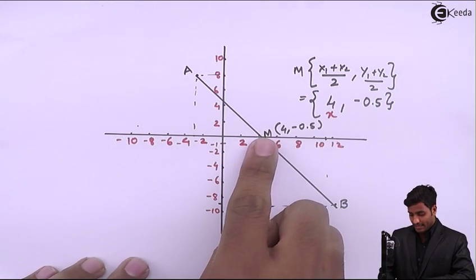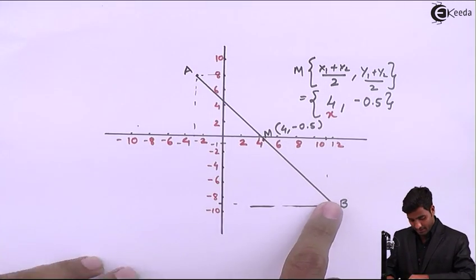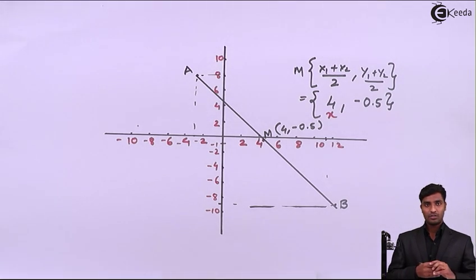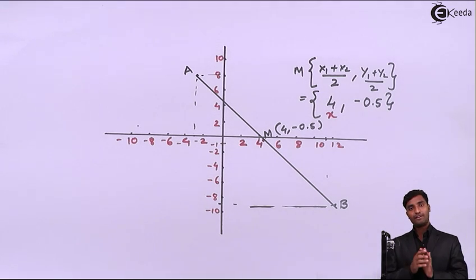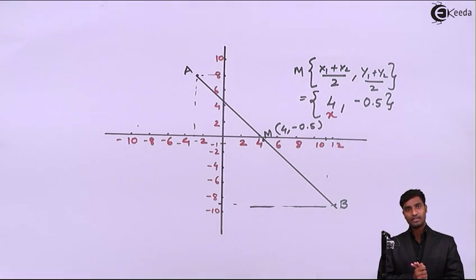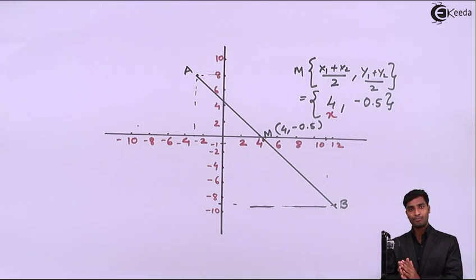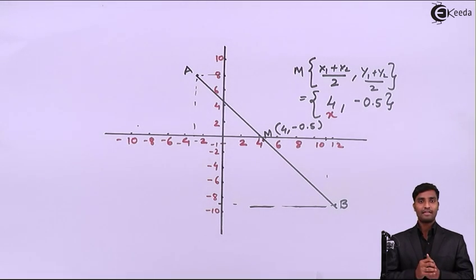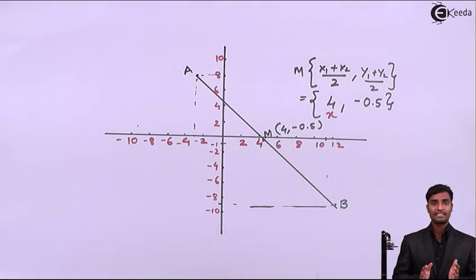We have to rotate line AB about this midpoint by 90 degrees counterclockwise. We know that when rotating any object, we first have to bring that object to the origin. Here the midpoint M needs to be brought to the origin, so the first step is translation — we have to bring midpoint M to the origin.